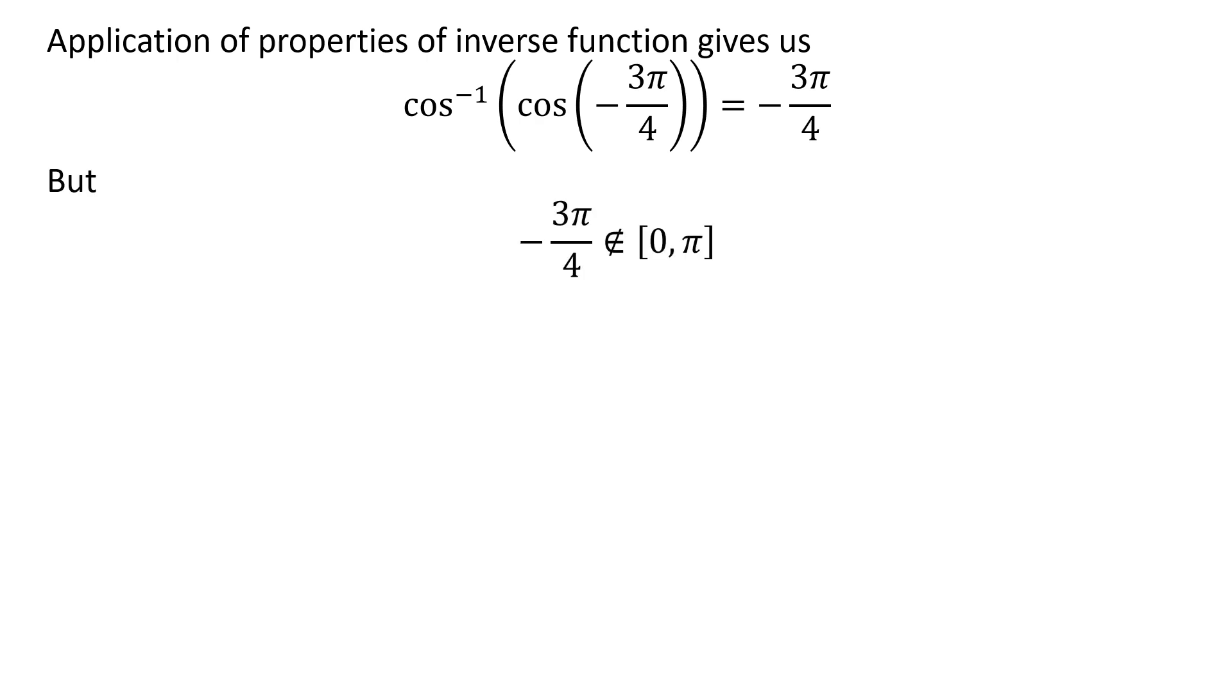But minus 3 times pi upon 4 does not belong to the closed interval of 0 and pi. As the range of inverse of cosine function is the closed interval of 0 and pi, minus 3 times pi upon 4 is not the solution.